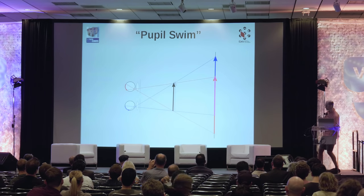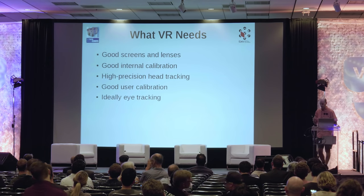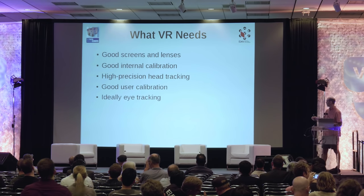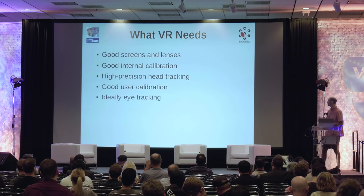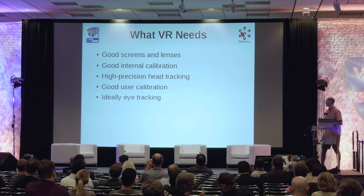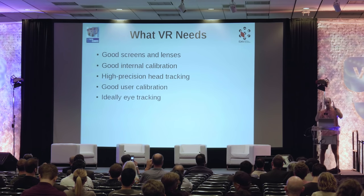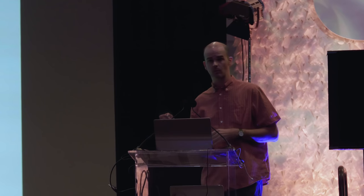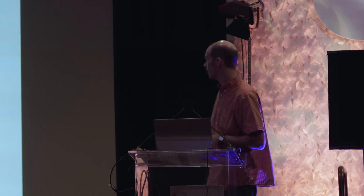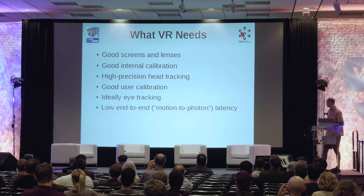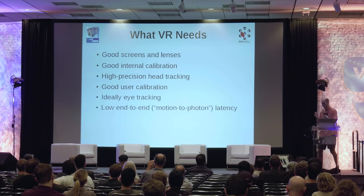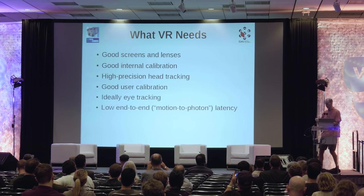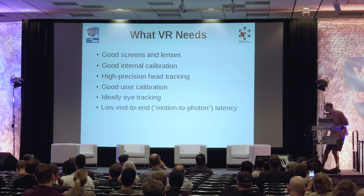To summarize, in order to create a convincing VR system you need: good screens and lenses, good internal calibration to know where screens and lenses are, high-precision head tracking, good user calibration — meaning IPD and eye relief — and ideally eye tracking for dynamic configuration. There's also one critical additional requirement: low end-to-end latency, also called motion-to-photon latency — the time between making a movement and the screen actually showing the updated image. It should be less than 16 milliseconds.